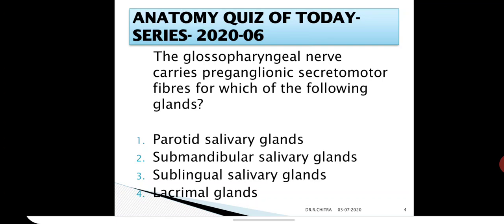Today's question is, the glossopharyngeal nerve carries preganglionic secretomotor fibers for which of the following glands? Parotid salivary glands, submandibular salivary glands, sublingual salivary glands, and lacrimal glands.